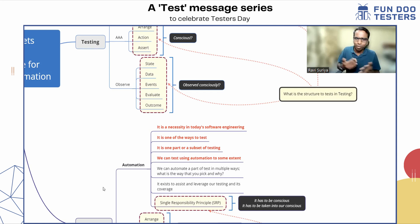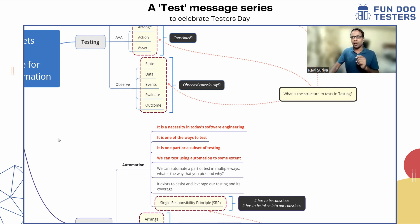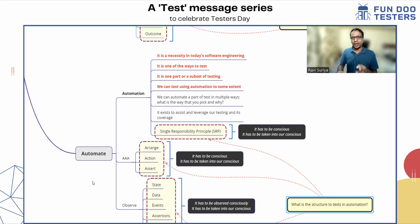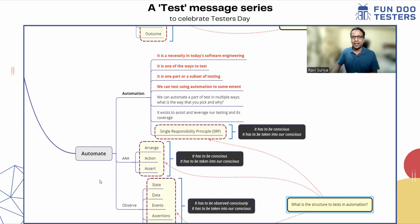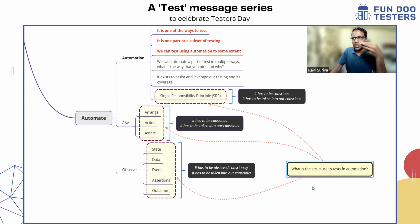We can automate a test to some extent using automation, and we can test using automation to some extent. Like SRP with a test that I do manually, now SRP applies to the test that I write in programming. I consciously arrange, do actions, and assert when I write my automation, because I am putting my consciousness into writing those instructions in a program, and that program interacts and tries to do the test run. I evaluate them. What is the structure of that test that I do in automation?